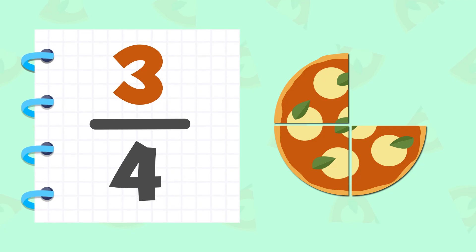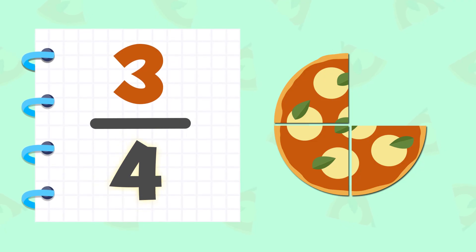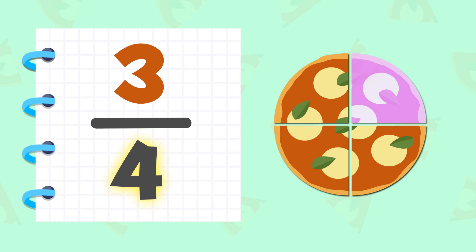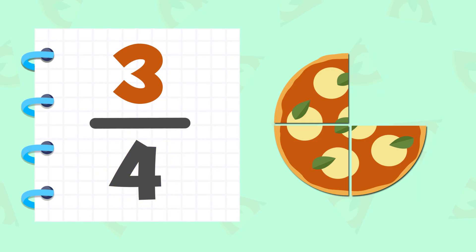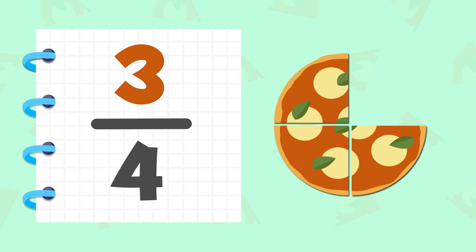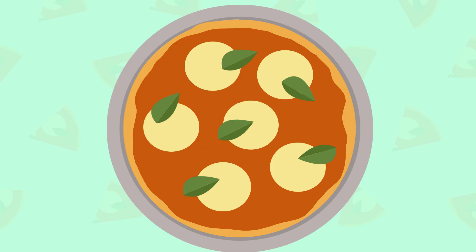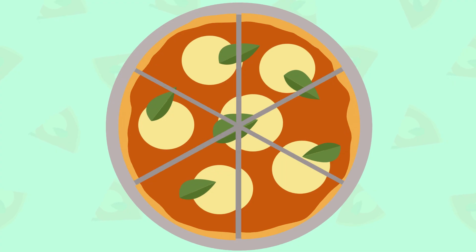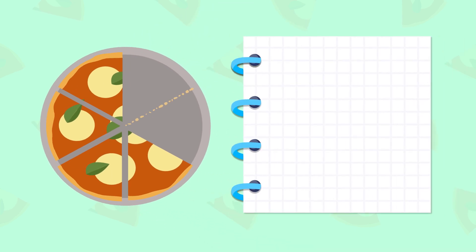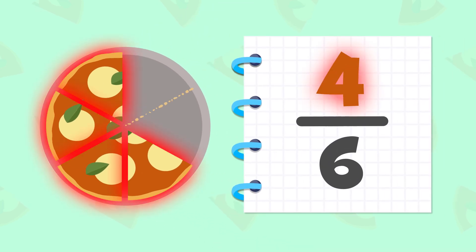The number below the line is the denominator. It indicates into how many equal parts the object is divided. In this case, it's divided in four parts. The numerator is the number above the line — it indicates the number of parts taken away from the whole. And if we divided this last pizza in six parts and ate two, there would be four-sixths of pizza left in the box.